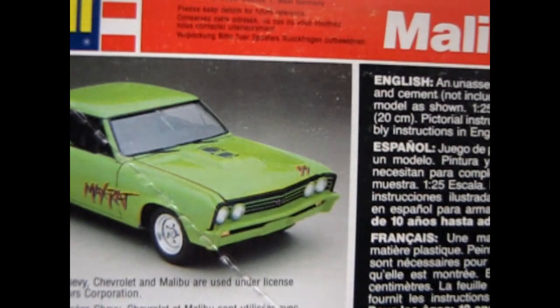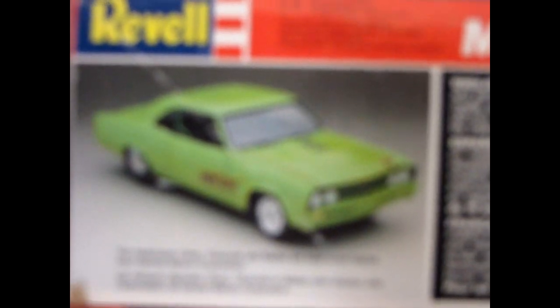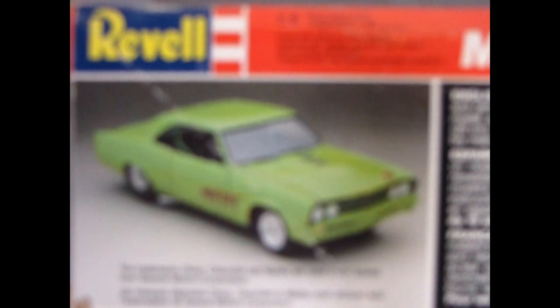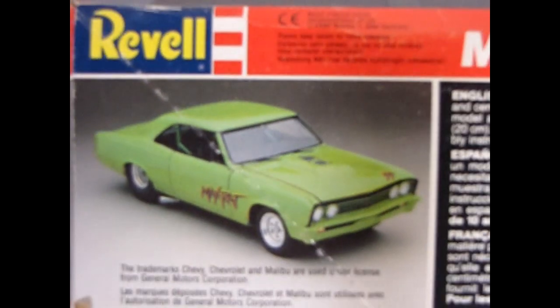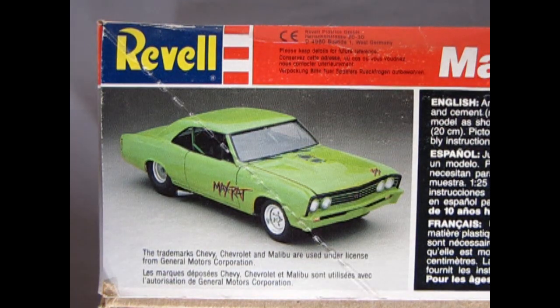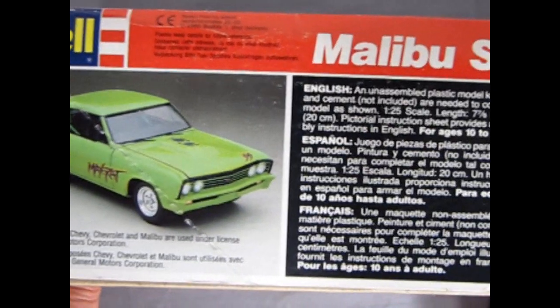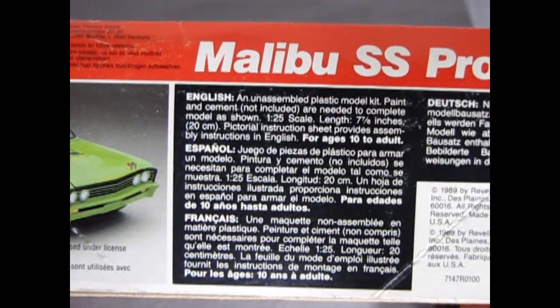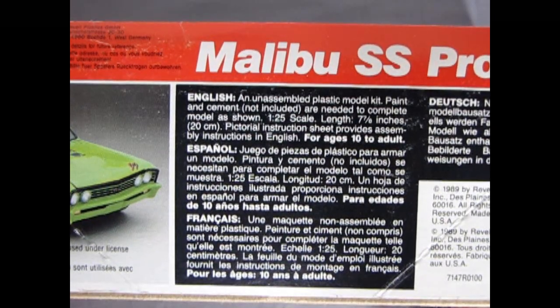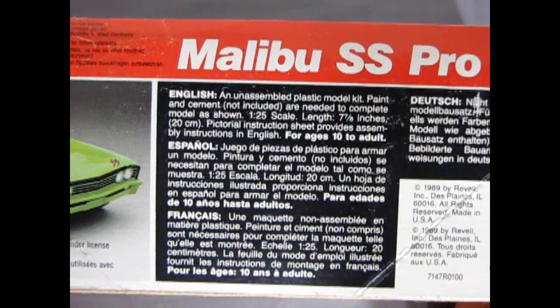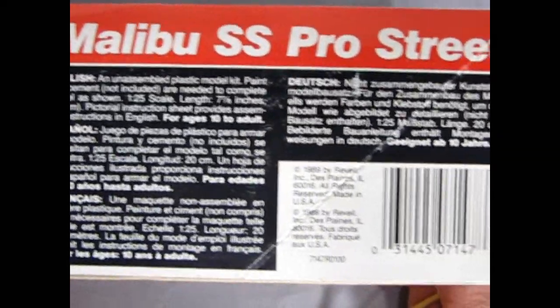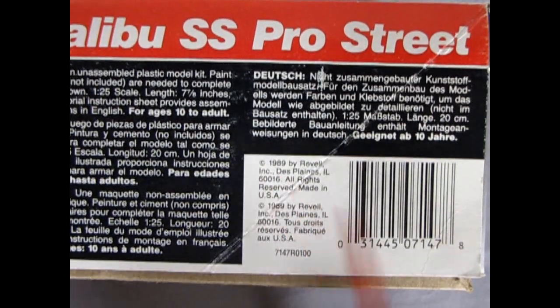Turning the box up, oh everything crashed in there. The side of the box looks like that. Front of the box, okay there's our Malibu. The top three quarter shot down and then it's got all the details over here saying what kind of model kit it is. Unassembled plastic model kit, paints and cement not included, 25th scale length and the width and all that stuff. And of course right here 1989 by Revell.